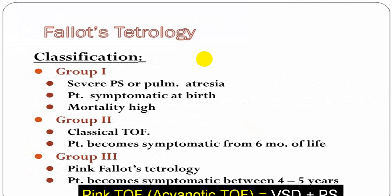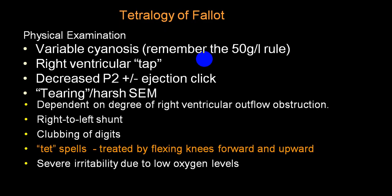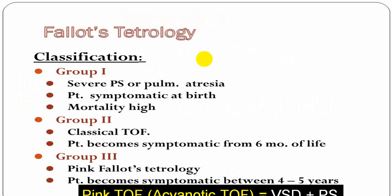Patients can be divided into three groups. Group one: severe pulmonary stenosis or pulmonary atresia — very high mortality. Group two: usually symptomatic from six months of life. Group three: usually pink and less cyanotic — called 'pink TOF' or acyanotic TOF — where there is very mild pulmonary stenosis with VSD, so less resistance and patients are usually not cyanotic.